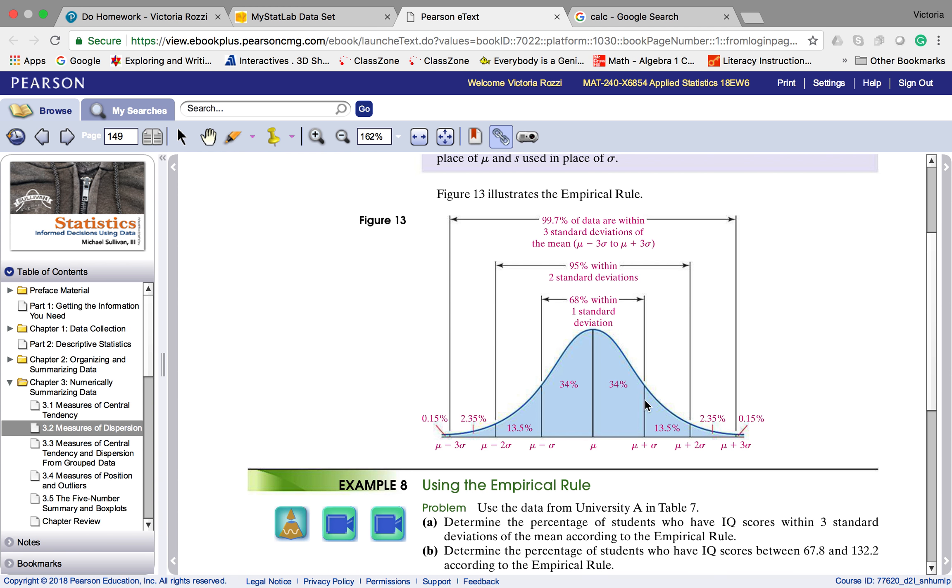If I add one standard deviation, I'll get a number. I add another standard deviation, I'll get a number. I add another standard deviation, I'll get a number. And the same thing going the other way. Subtract one standard deviation, subtract one standard deviation, and subtract one standard deviation.